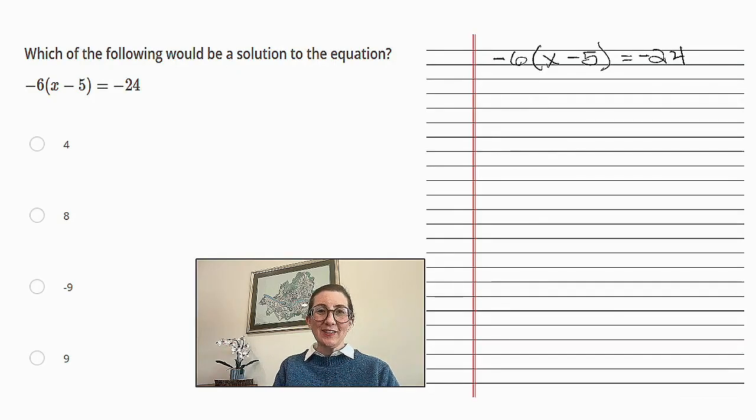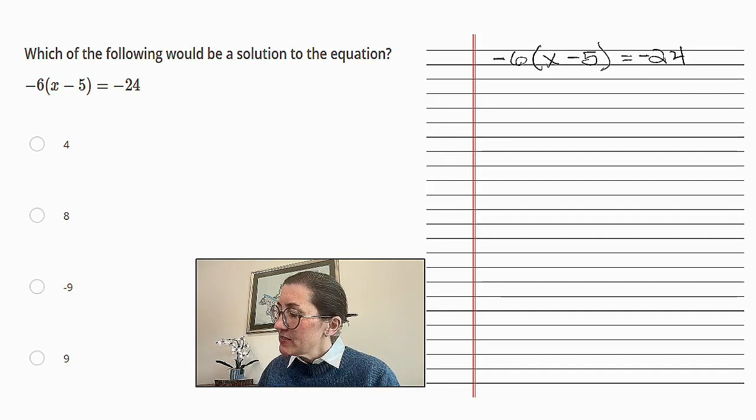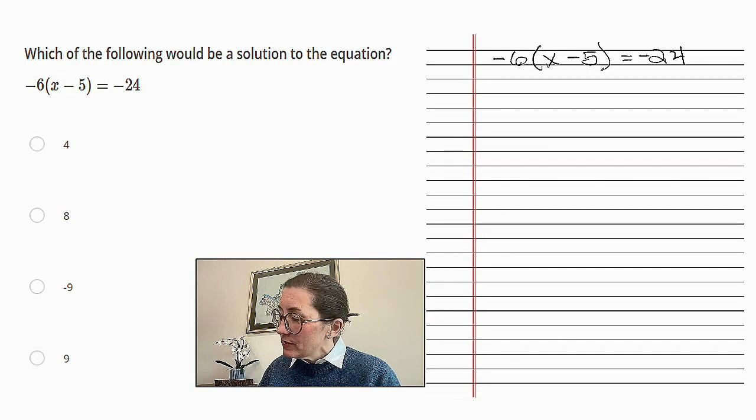Alright, the first question. Which of the following would be a solution to the equation? Now our equation is -6 times, in brackets, x minus 5, close brackets, equals -24.